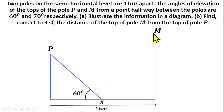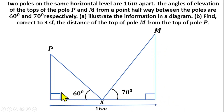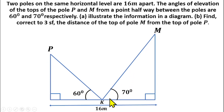The poles are perpendicular to the ground, so there is a 90-degree angle at the base of each pole. Now, why are the two poles not the same length? Because the angle of elevation to one is 60 degrees and to the other is 70 degrees — since the distances from K are equal at 8 meters, a larger angle means a taller pole.